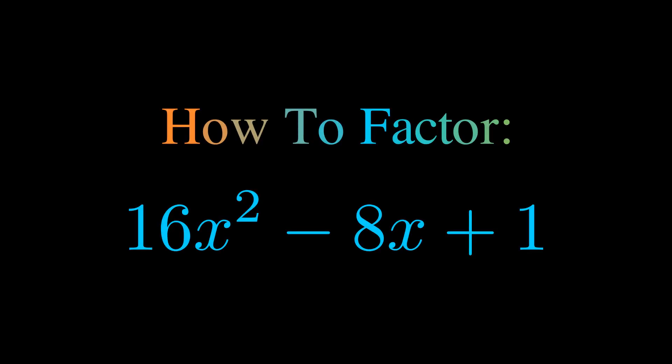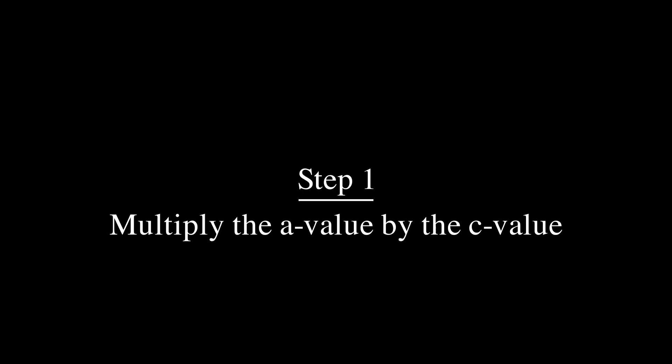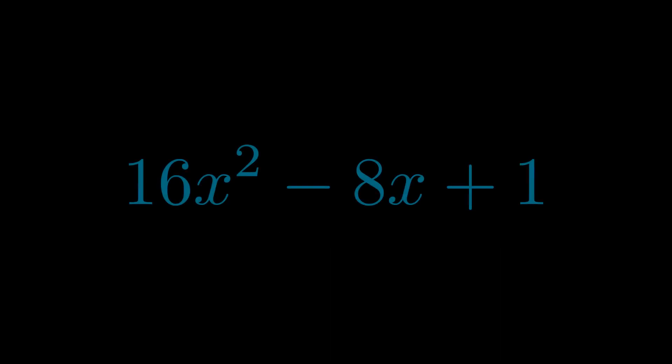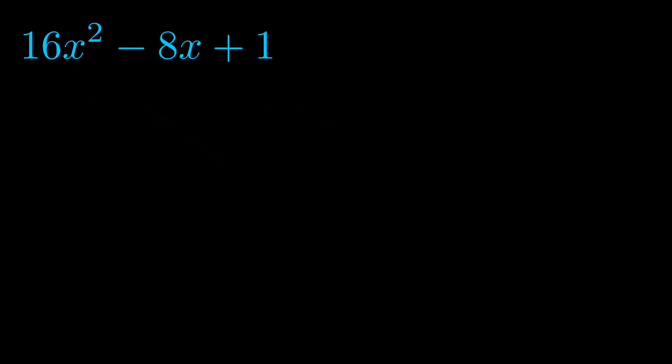In this video we're going to learn how to factor this equation. Step one when factoring an equation of this form is to multiply the a value by the c value. Here we can see that our a value is the coefficient on the x squared term and our c value is the constant term. When we multiply these two values we get this value here in magenta.